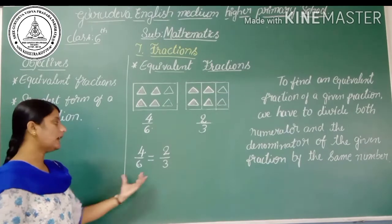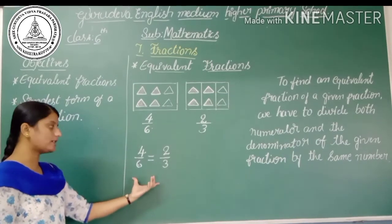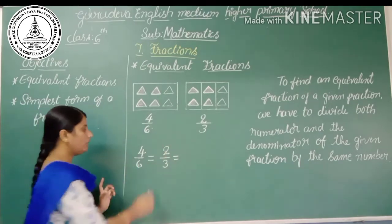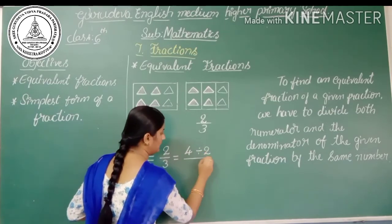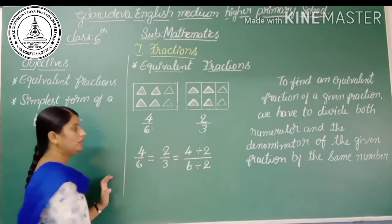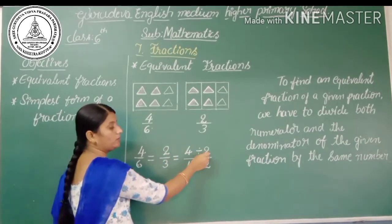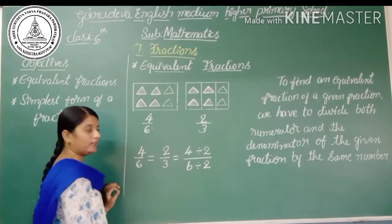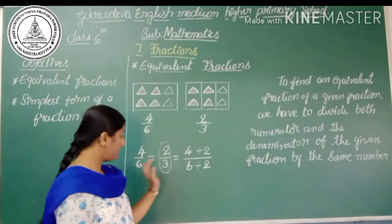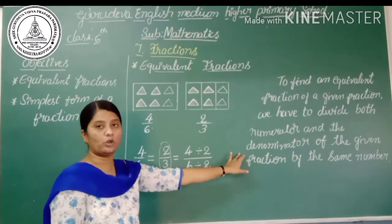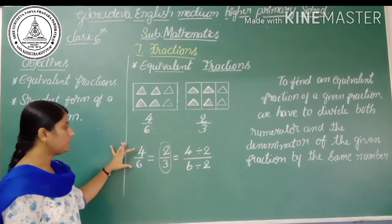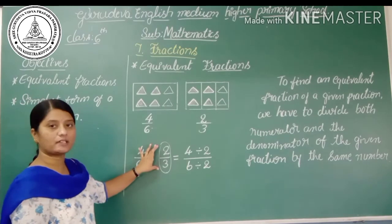We can say that 4/6 is equal to 2/3. If we divide 4 by 2 and 6 by 2, we get the same fraction 2/3. So we can say that to find an equivalent fraction of a given fraction, we have to divide the numerator and the denominator of the fraction by the same number. Since 4/6 is divisible by 2, dividing gives the equivalent fraction 2/3.